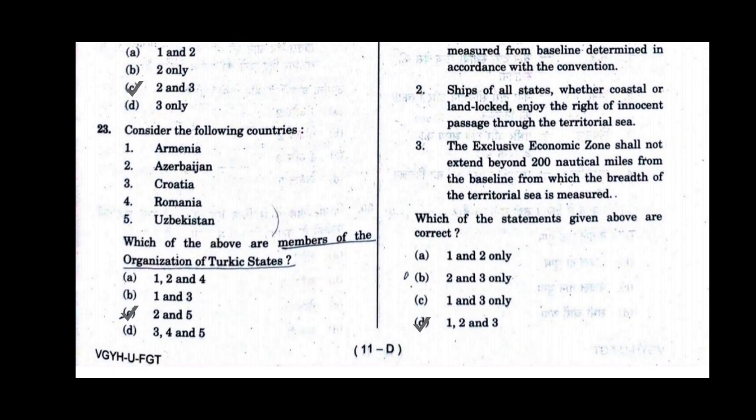Question number 23. Consider the following countries: Armenia, Azerbaijan, Croatia, Romania, Uzbekistan. Which of the above are members of the Organization of Turkic States? Option C will be the correct answer: 2 and 5 — Azerbaijan and Uzbekistan.